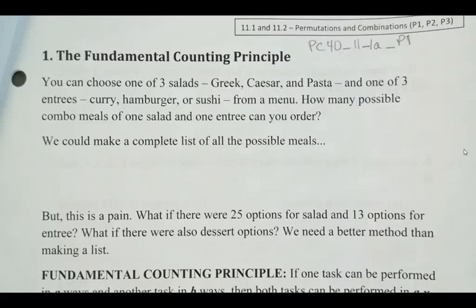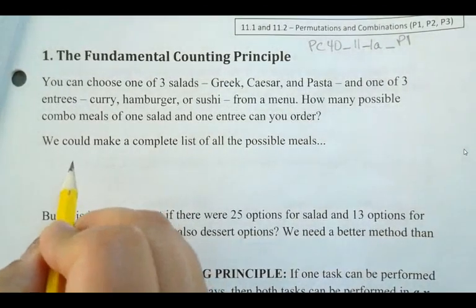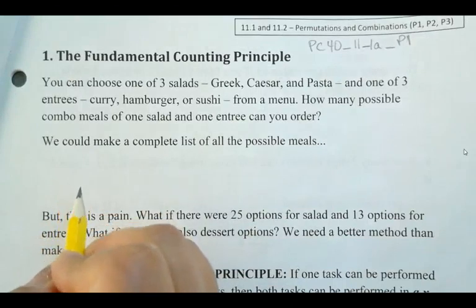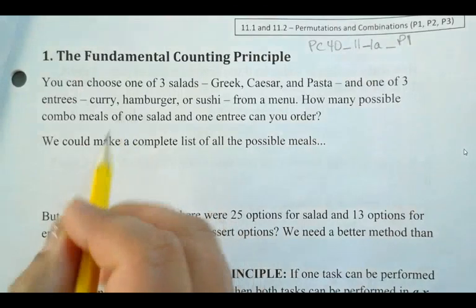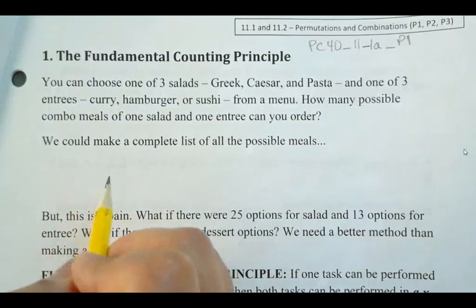So we can make a complete list of all the possible meals. I believe Applebee's has a kind of pick-your-own option, right? So for like 20 or 30 bucks, they've got a bunch of different options — you choose from a couple of different apps, a couple of different entrees, and then you get a dessert. But for this case, we'll just simplify it to salad and an entree.